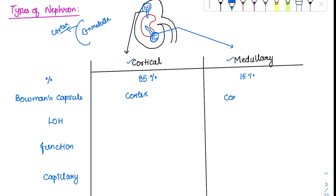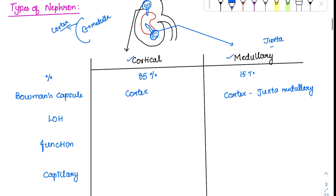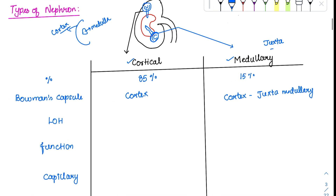More specifically, the Bowman's capsule of medullary nephrons is located near the medulla — that is, juxtamedullary. That is why this group of nephrons is also called juxtamedullary nephrons; their cortex is located just next to the medulla. The loop of Henle is very short for cortical nephrons, whereas it is very long for medullary nephrons.